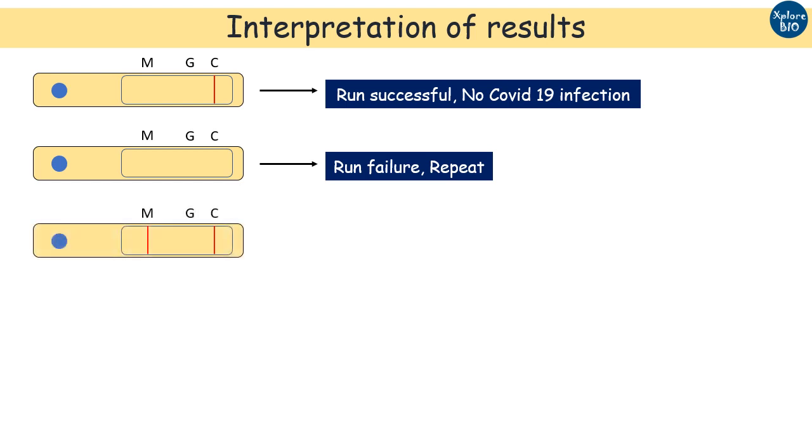If M line appears, it means IgM antibodies are present suggesting recent infection of COVID-19, as IgM antibodies are produced as a result of primary immune response.